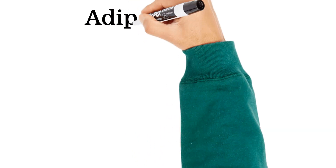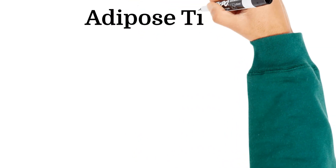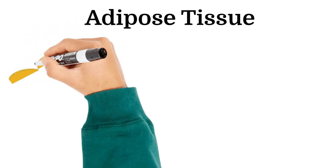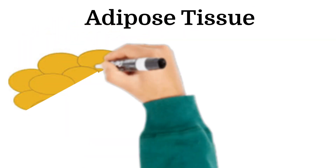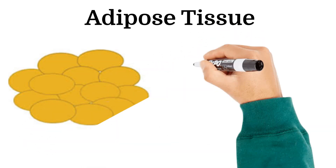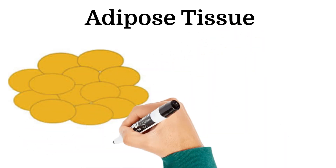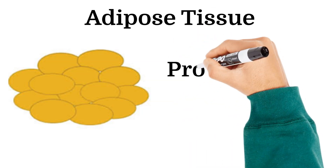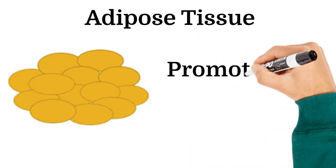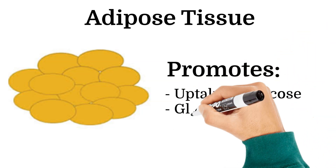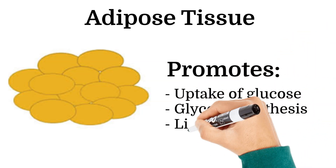In adipose tissue, insulin facilitates the uptake of glucose by adipocytes to synthesize glycerol, which is then used to join with free fatty acids produced by the liver to form triglycerides. These triglycerides accumulate in the adipocytes, increasing lipogenesis. Insulin also inhibits the breakdown of fatty acids and instructs the body to use carbohydrates as an energy source instead of fat.